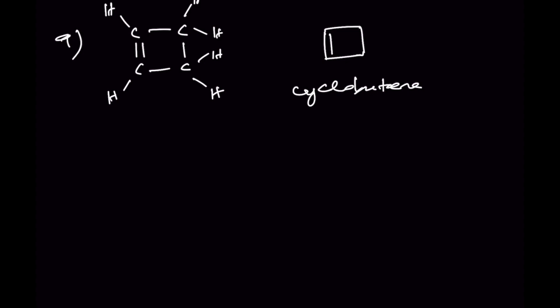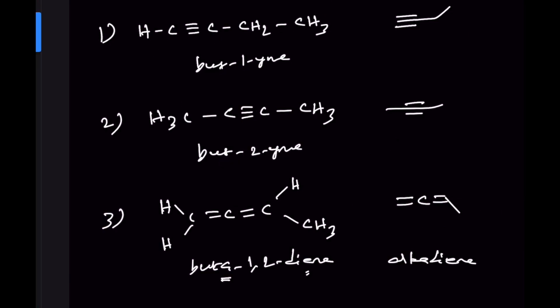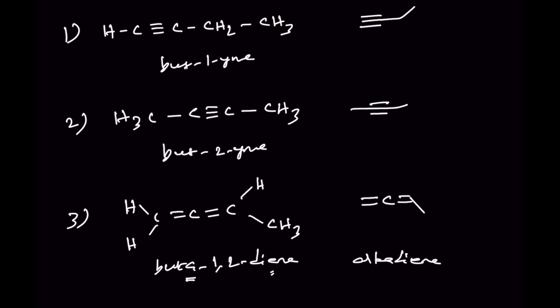These are the 9 isomers possible for C4H6. Some videos forget the bicyclic ring — bicyclo[1.1.0]butane — and count only 8. Others include the bicyclic compound but forget buta-1,2-diene, again reaching only 8. The correct total is 9 isomers. Thank you for watching; if you like this video, consider subscribing to Chemmedia.